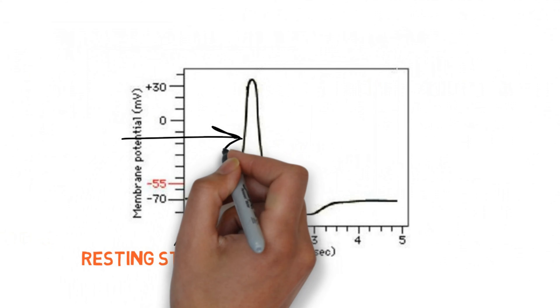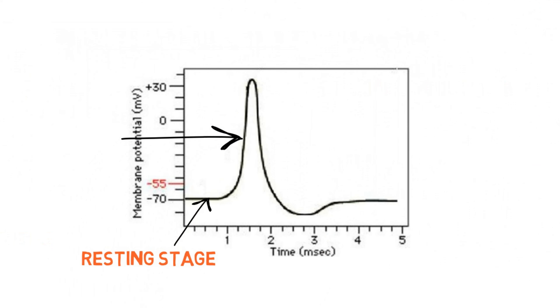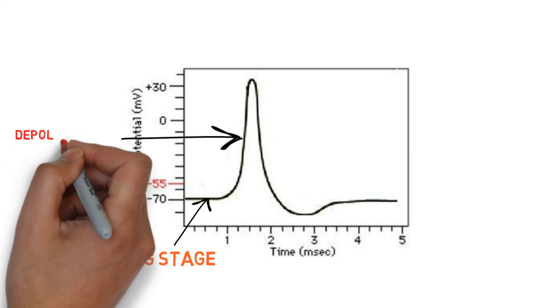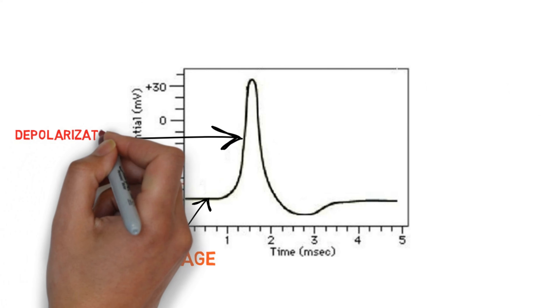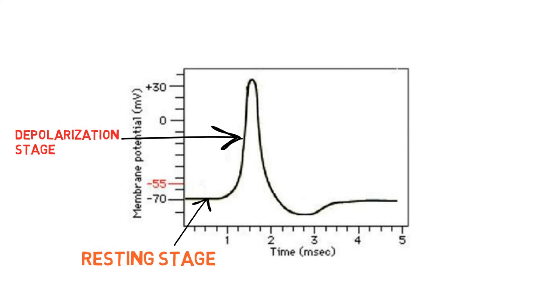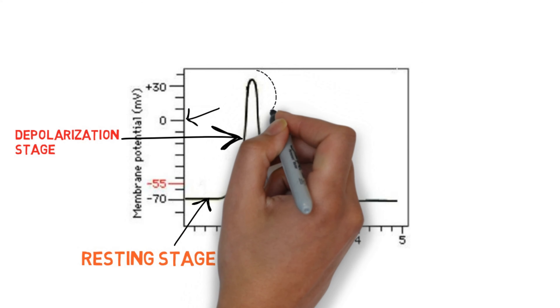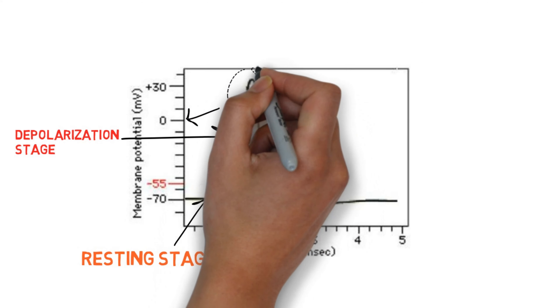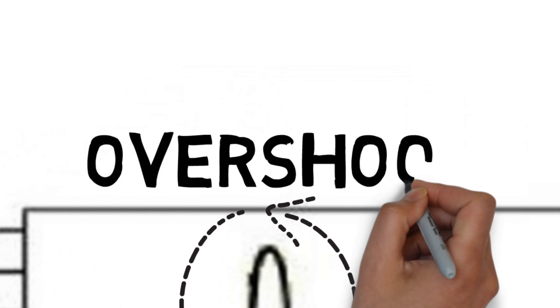Coming back to the graph, this is the depolarization stage where the potential starts to go in the positive direction. When the potential goes above zero, it is called an overshoot.